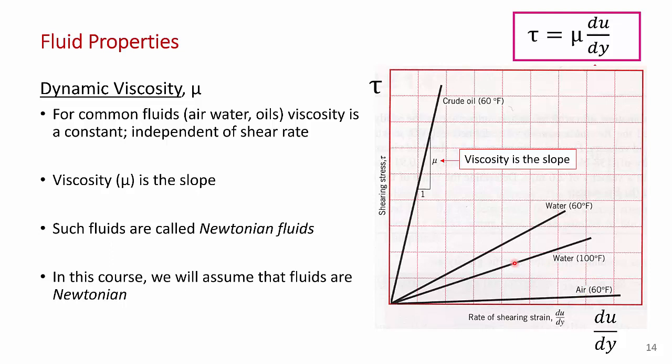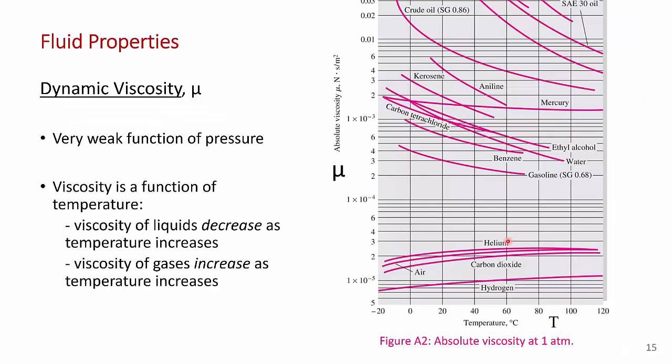You can see that water at 100 degrees C has a lower slope — it's less viscous than water at 60 degrees C. Looking at a graph of dynamic viscosity versus temperature, you can see that the dynamic viscosity of liquids — like crude oil and kerosene — decreases with temperature. So as you heat them up, they become less viscous, they flow more easily. You've experienced that yourself: if you take honey out of the fridge, once you warm it up it becomes a lot more runny, less viscous. So the viscosity of liquids decreases as temperature increases.